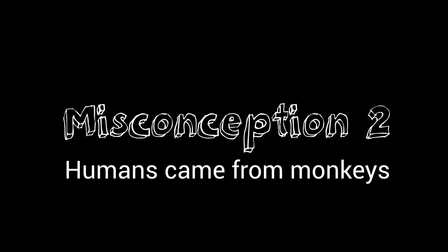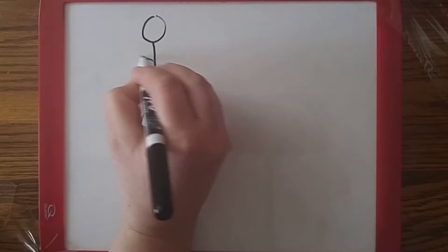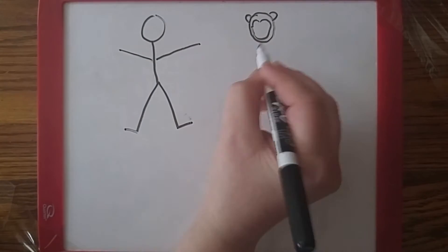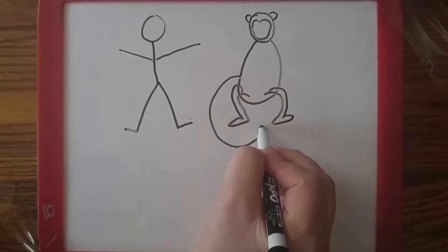Misconception number two, humans came from monkeys. Humans and monkeys share the same taxonomic family, but we did not evolve from them.